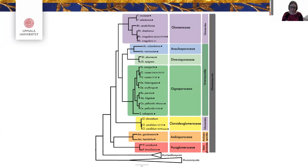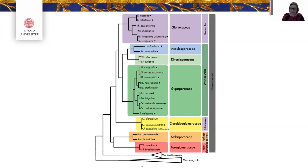Here is our phylogenomic analysis. We used the genomes we generated as well as previously published genomes to get very good taxon representation throughout AM fungi. It's based on 371 single-copy orthologues represented in at least 50% of the included taxa. We used Mycoromycota as an outgroup and recovered the same topology using both IQ-TREE and Bayesian analysis, with all nodes fully supported. We colored it based on the consensus taxonomy from Redecker and co-workers. With this comprehensive phylogenomic analysis, we demonstrate that all family-level classifications are well supported and are monophyletic lineages.